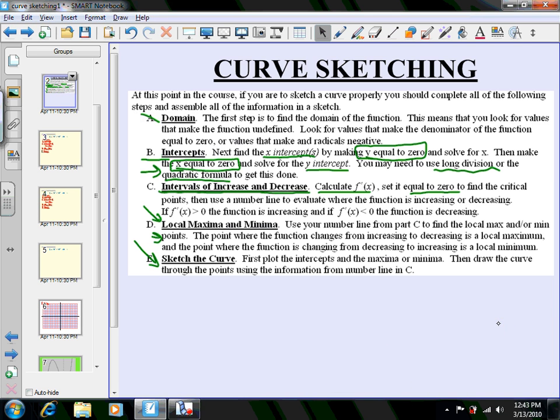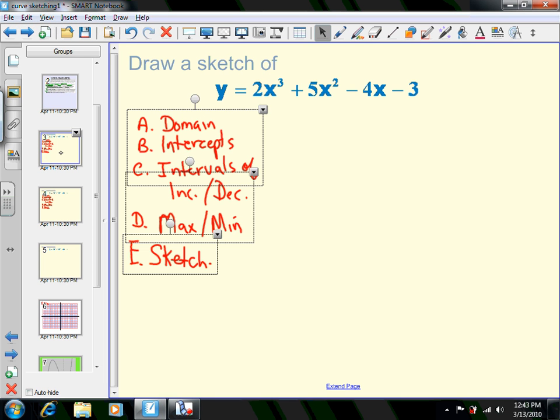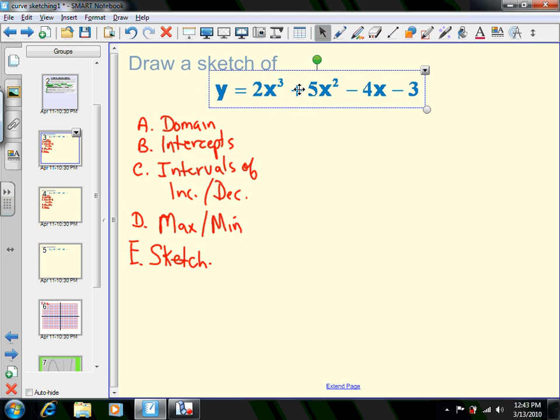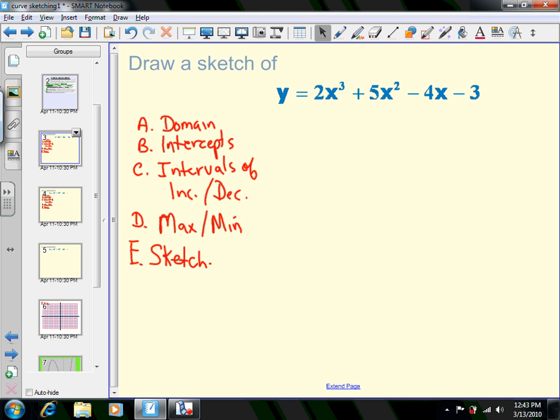Let's start with the question. If this is the graph we want to look at: y = 2x³ + 5x² - 4x - 3. There's nothing exotic, no square roots, no fractions. Therefore, my domain is all real numbers. We just move on from domain. Now we want intercepts.